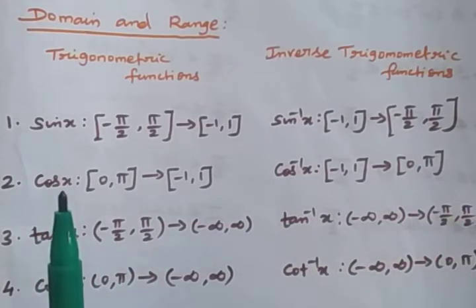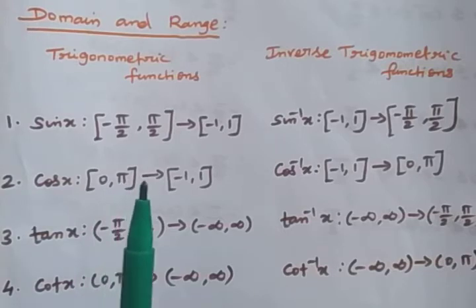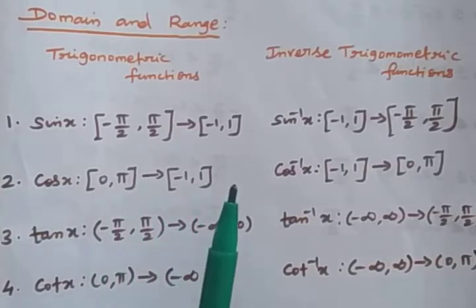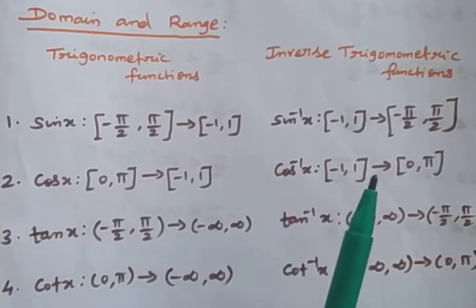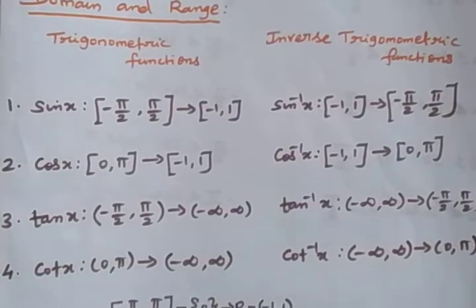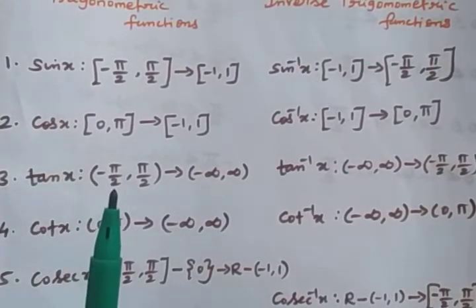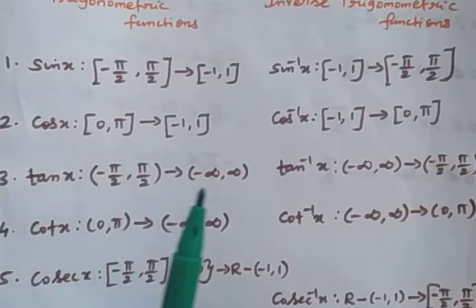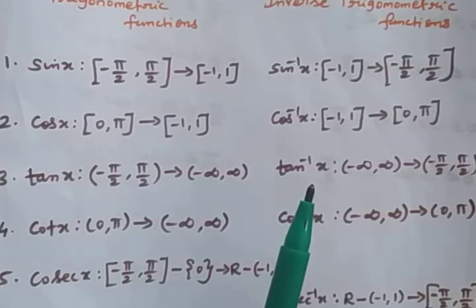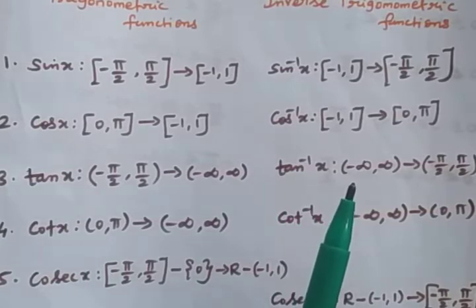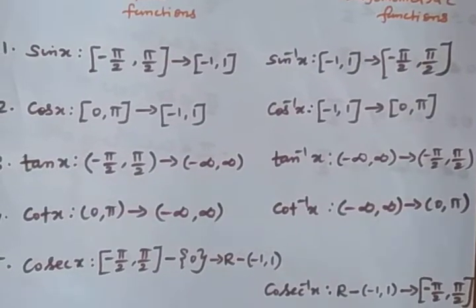Next, cos x has range [0, π] and domain [−1, 1]. So cos⁻¹(x) has domain [−1, 1] and range [0, π]. For tan x, the range is (−π/2, +π/2) and domain is (−∞, +∞). So tan⁻¹(x) has domain (−∞, +∞) and range (−π/2, +π/2).